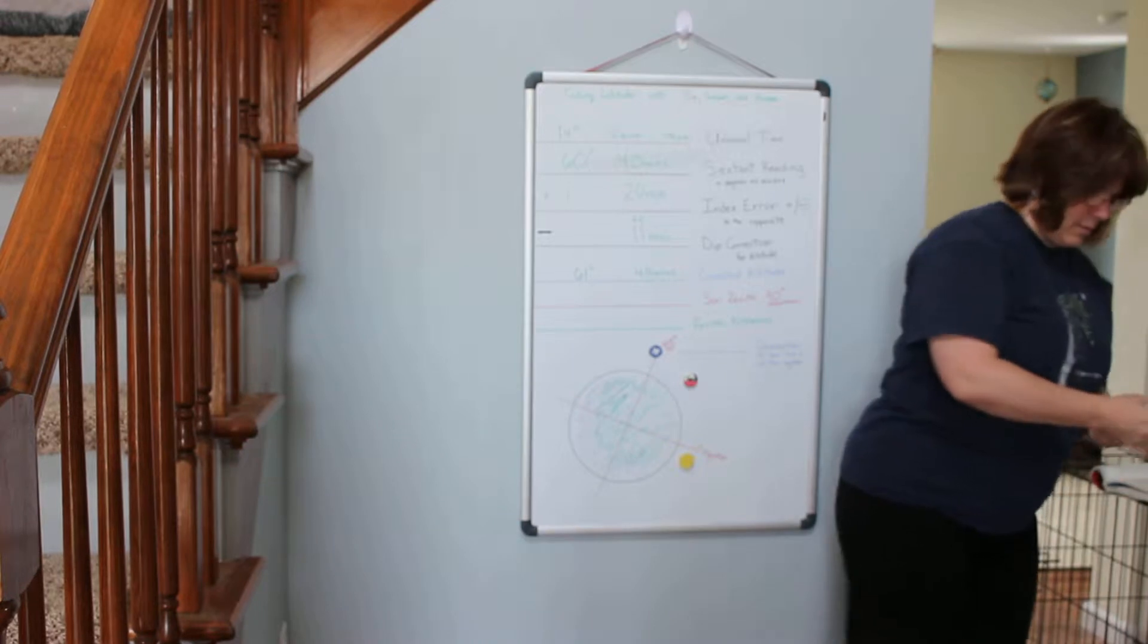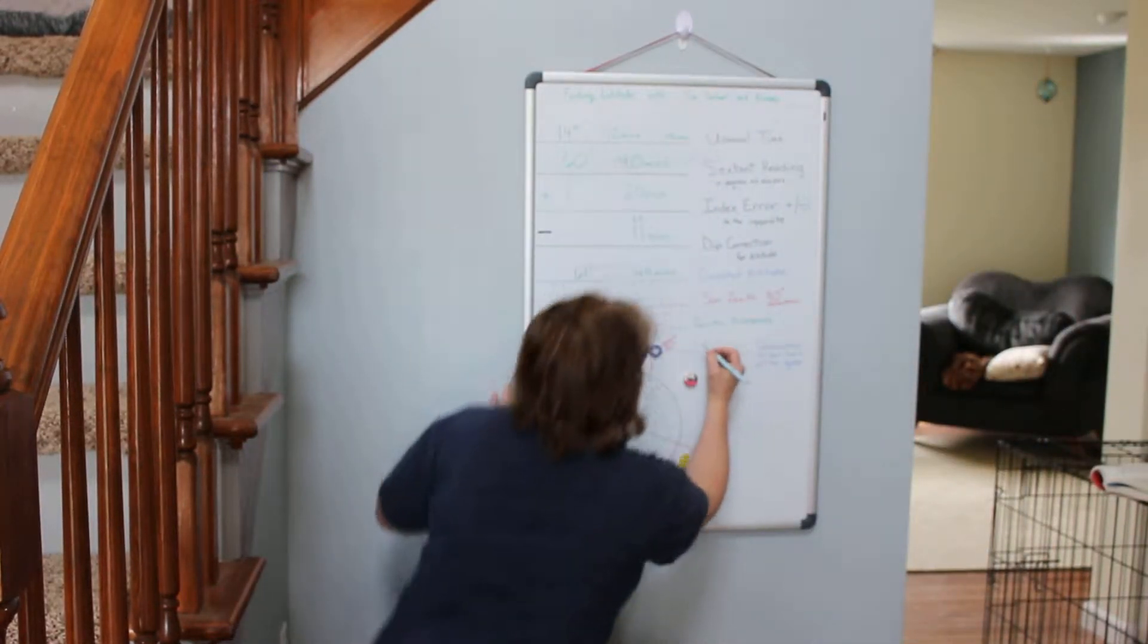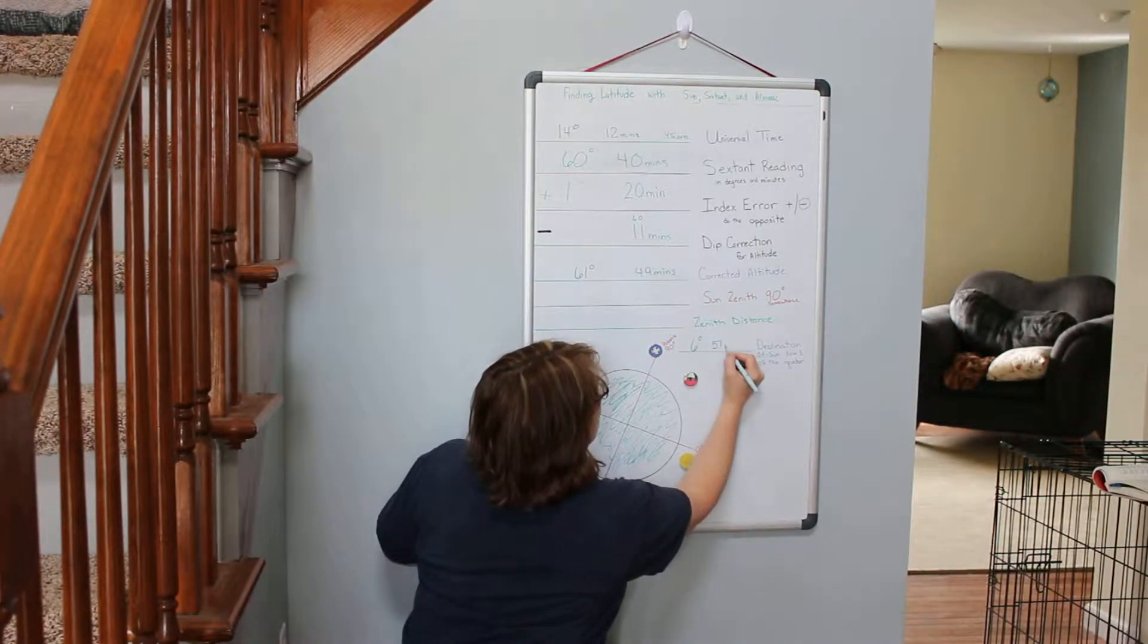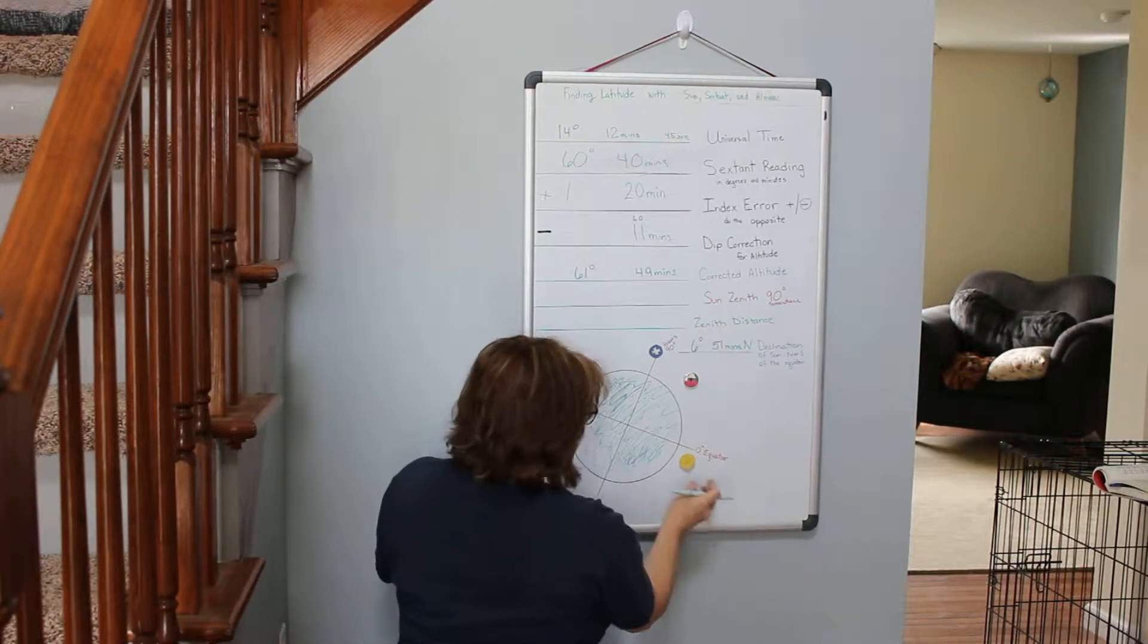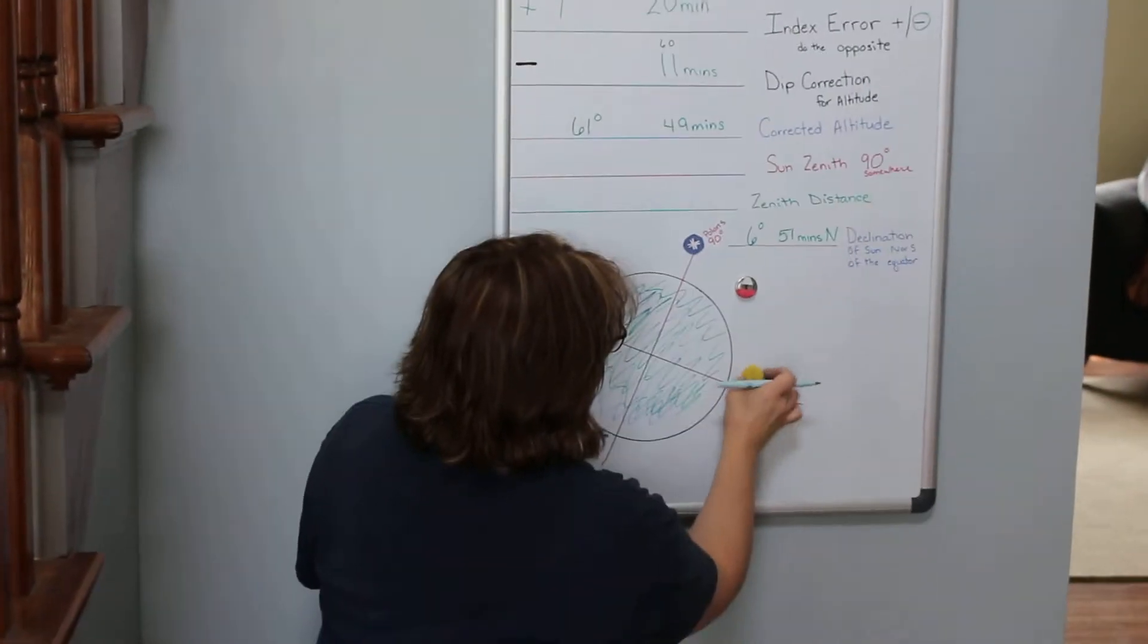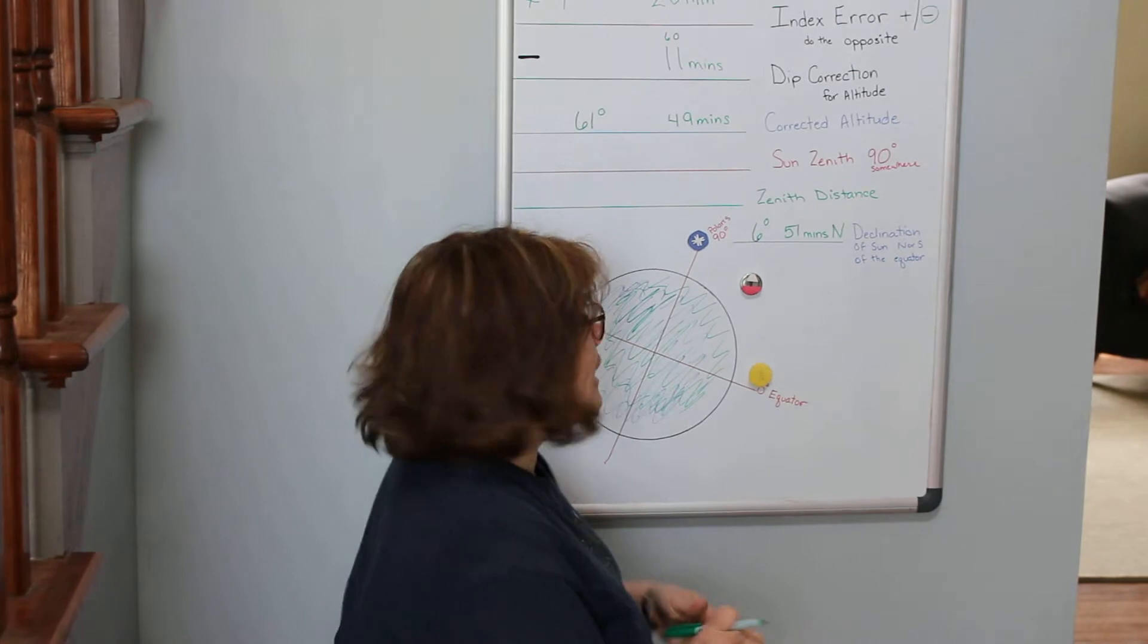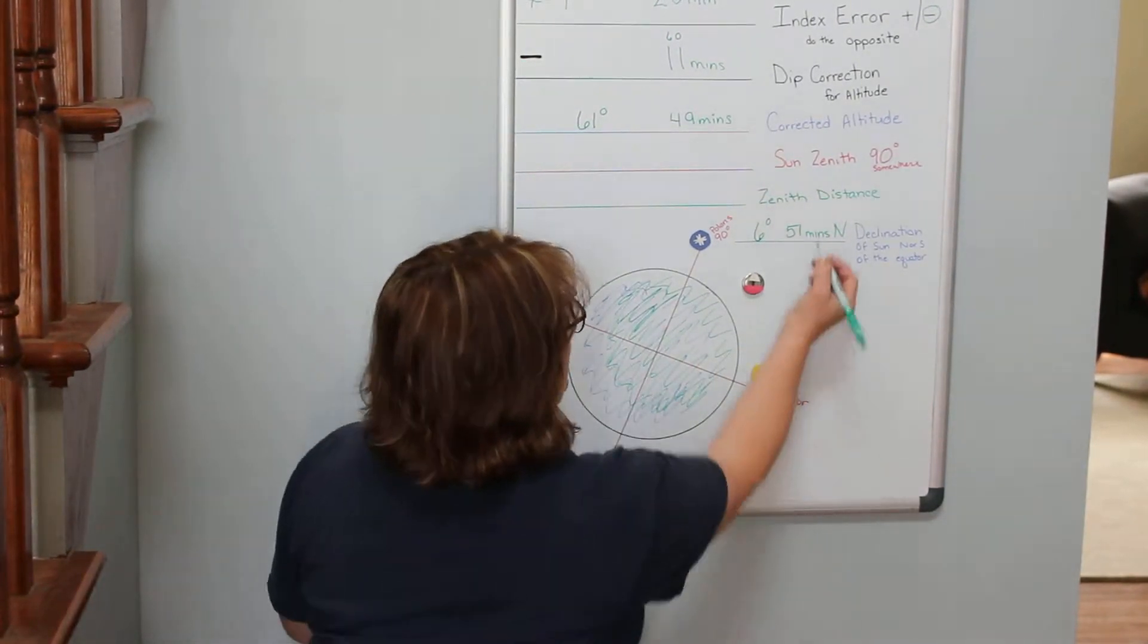North 6 degrees and 51 minutes north, and I always want to note north. So I'm going to move my sun to where my declination is. It's like right there, okay, somewhere right there. It's 6 degrees north of my equator, 6 degrees and 51 minutes to be exact north of my equator.